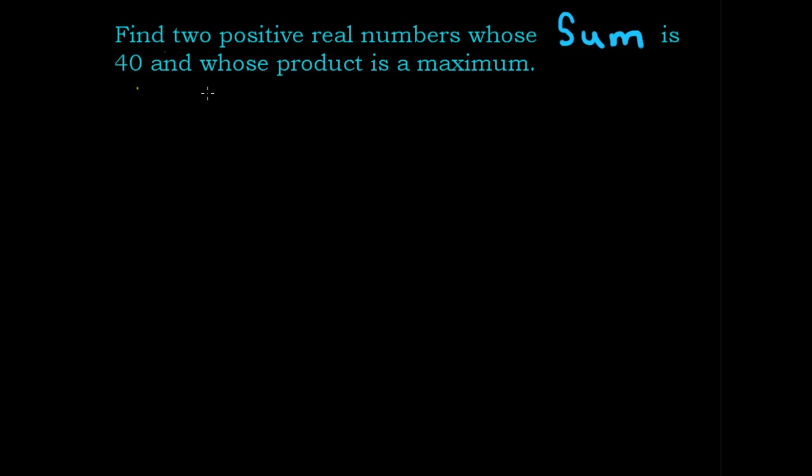It says two positive real numbers, so let's call our real numbers a and b. It says positive, so we know that a and b must be larger than zero. a plus b is equal to 40. Two positive real numbers whose sum is 40 - this is the first part of the question. The second part says their product is a maximum.